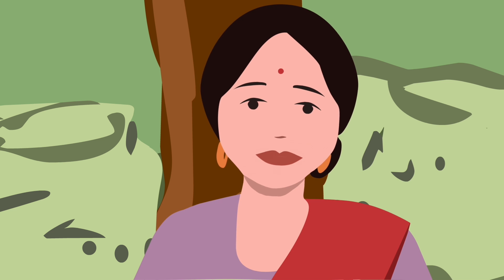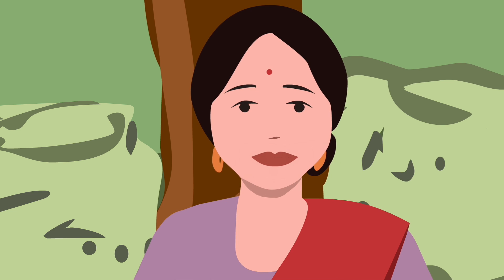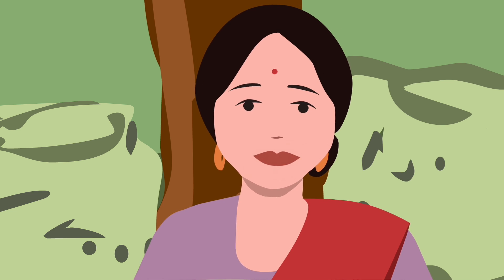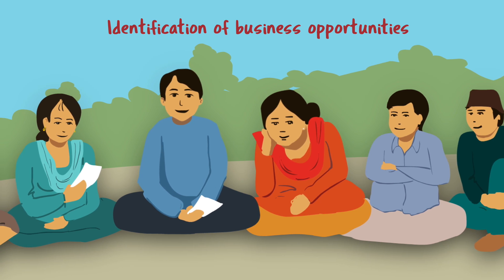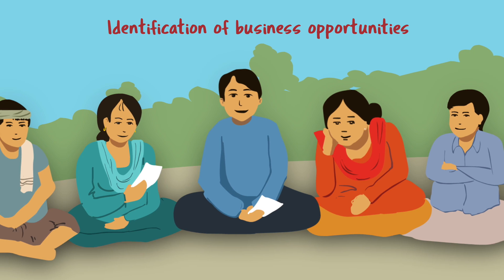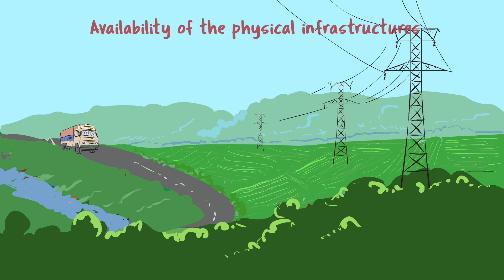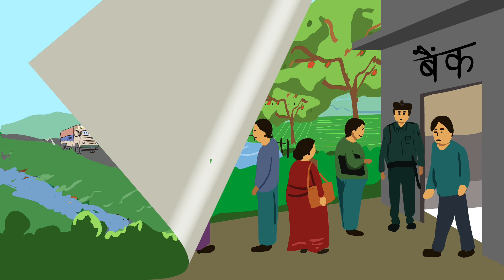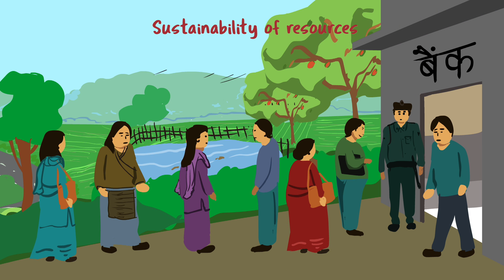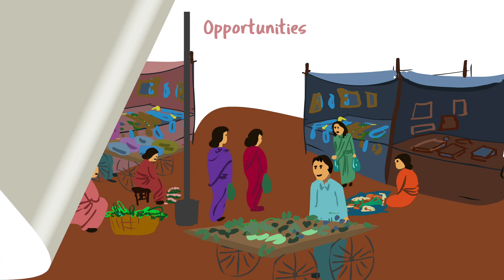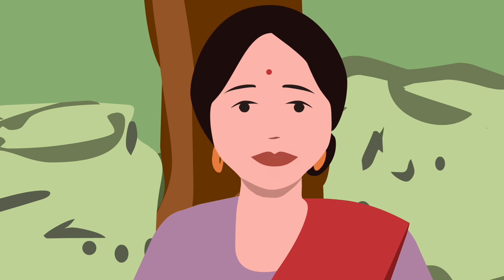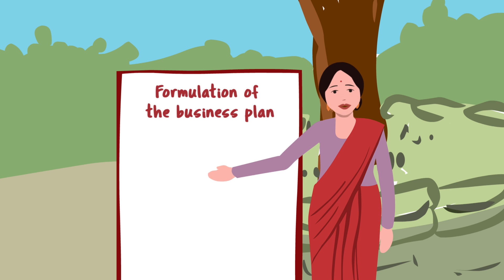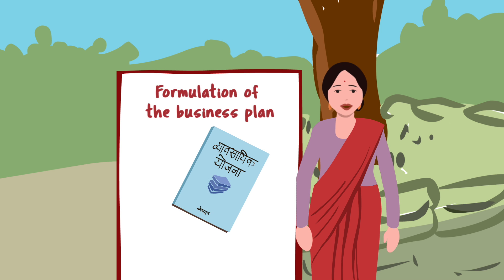The methodology of area potential survey follows these steps: identification of business opportunities in a particular area by analyzing aspects like availability of physical infrastructures, sustainability of resources, legal provisions, and opportunities and challenges of the current business. Considering these points, we can identify the viable business.